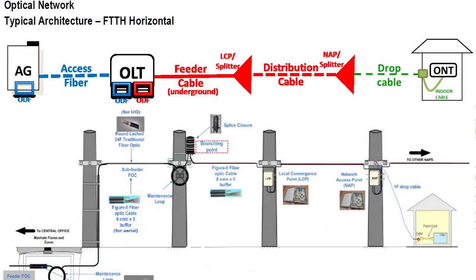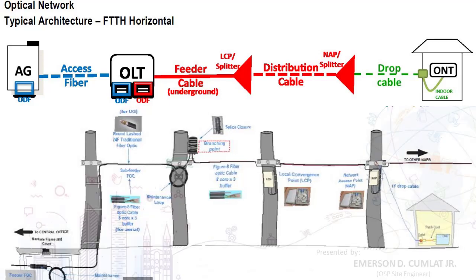Let's understand first what FTTH network architecture Globe Telecom Philippines follows. Most telecoms in Philippines use a cascaded or distributed splitting approach. This means there are two combinations of splitters used to reach a uniform count of lines per OLT port. The first level splitter is called LCP, or Local Convergence Point, and the second level splitter is called NAP or Network Access Point.